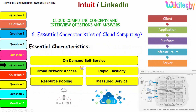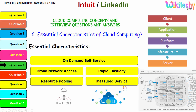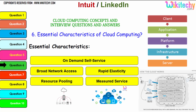Further essential characteristics include: on-demand self-service — you can get the service on demand. Broad network access — very wide network availability. Rapid elasticity — you can increase and reduce resources quickly. Resource pooling — allocate however much resource you need. Measured service — a pay-as-you-go model where you pay only for what you use. These are the essential characteristics of cloud computing.